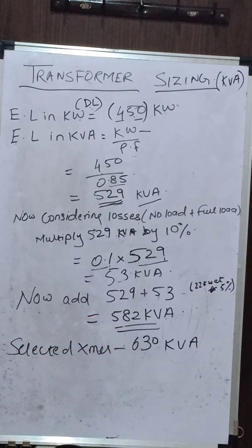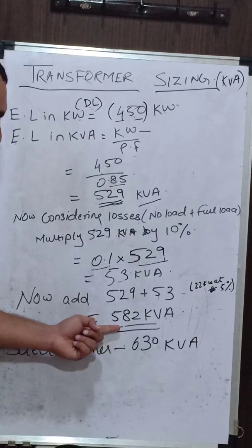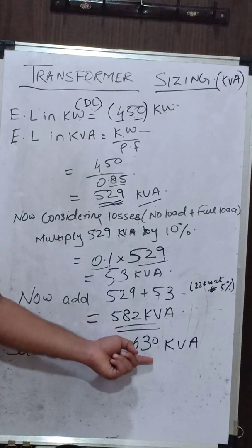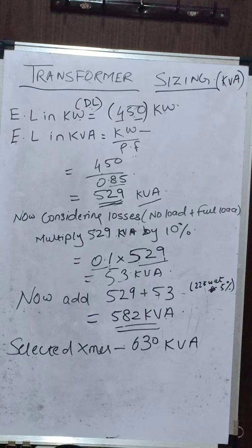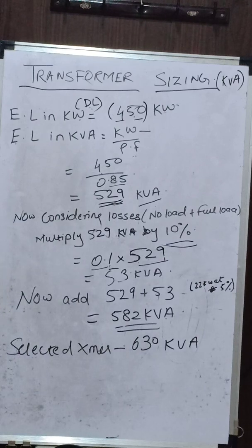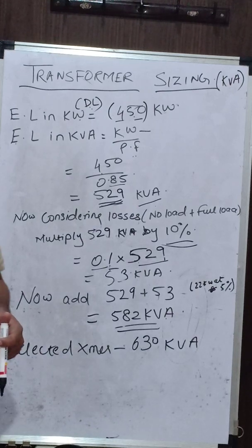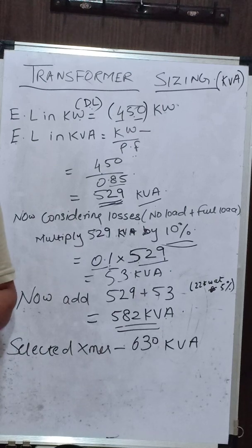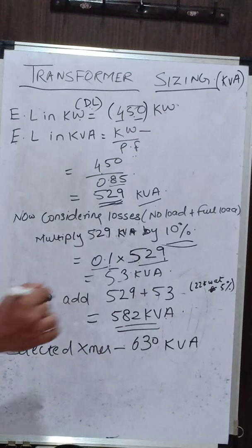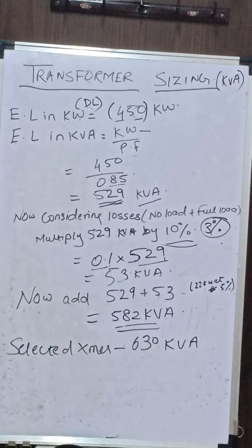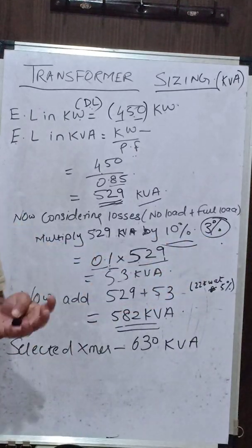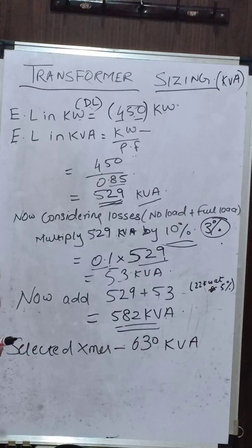Since 582 kVA is not a standard size, you select the nearest available standard transformer: 630 kVA. Regarding the 10% multiplier — as per the Energy Conservation Building Code and Indian Standards IS 11180 and IS 11171, the internal losses (no-load and full-load) of any transformer shall not exceed 3%. So by multiplying by 10%, we are being conservative — only 3% is consumed by transformer losses.